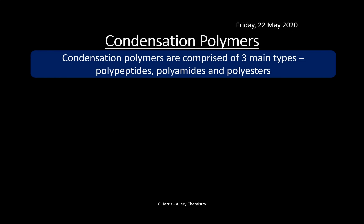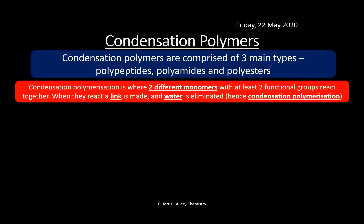Condensation polymers are split into three main types: polypeptides, polyamides, and polyesters. Condensation polymerization involves two different monomers, each with at least two functional groups. When they react, a link is formed and water is eliminated — hence the name condensation. Contrast this with addition polymerization, where we open a double bond in an alkene to connect monomers into longer hydrocarbon chains. Condensation polymers are different.